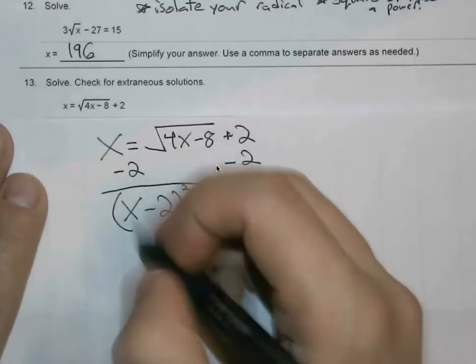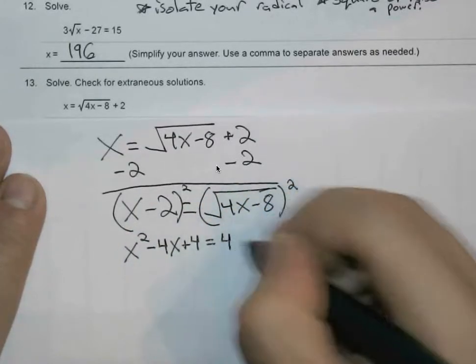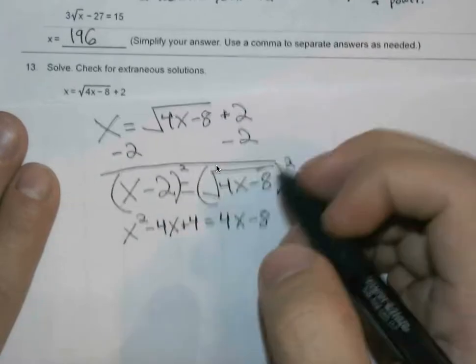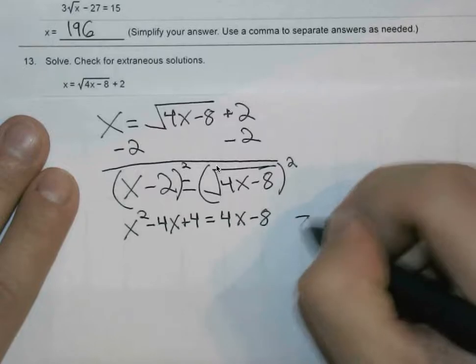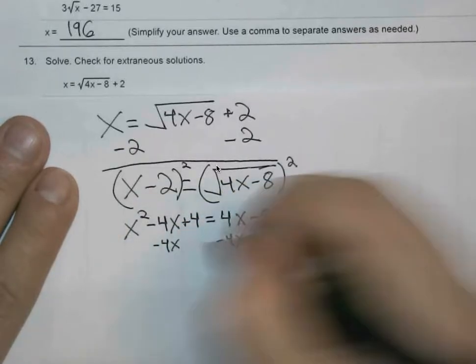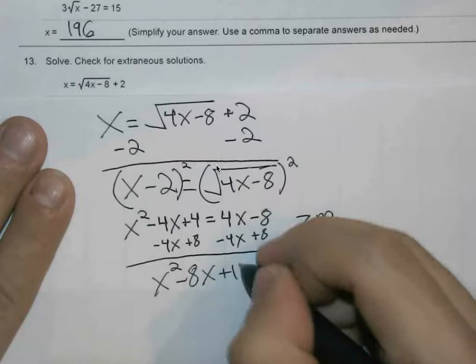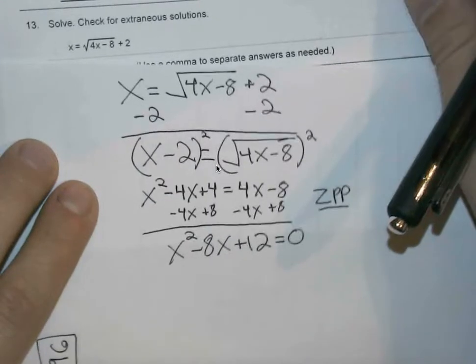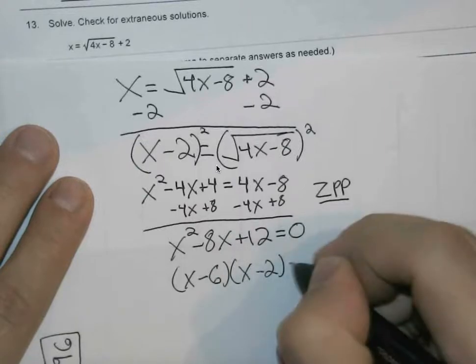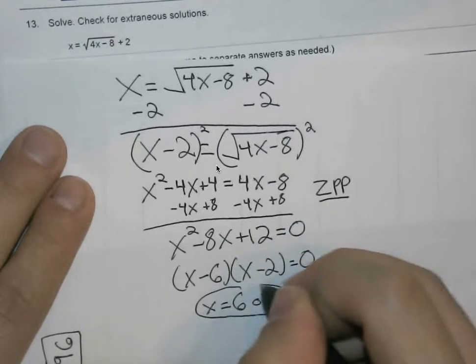So x minus 2, if you foil that out, gets you x squared minus 4x plus 4, where this now equals 4x minus 8. When we start to move every term to the same side, so we can apply the zero product property, we subtract 4x here and here, and also add 8. This gets us x squared minus 8x plus 12 equals 0. You can definitely factor this to x minus 6, x minus 2, claiming it's equal to 0. So our potential answers are 6 or 2. But again, double check. You have to check what's extraneous or not extraneous.